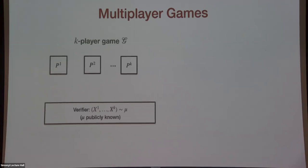I'll begin by talking about what multiplayer games are. In general, we'll talk about K-player games, denoted by G. Such a game has K players, denoted by P1 up to PK — we use superscripts for the players — and this game also has a verifier. The game starts by the verifier sampling K questions, X1 through XK, from a joint distribution mu.